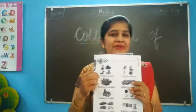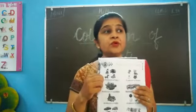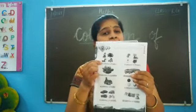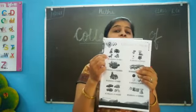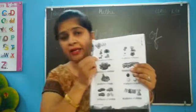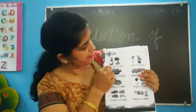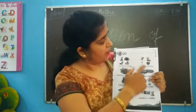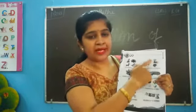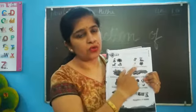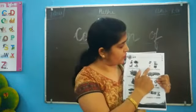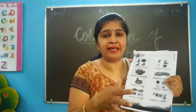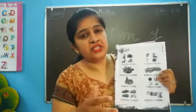Collection of toys. Aap ki khub saari khilone hai — unka jo collection hoa, unka jo group hoa, that is called collection of toys. Now, collection of flowers. Khub saari flowers ho gai — rose ho gaya, marigold ho gaya, sunflower ho gaya. Un sab flowers ko apan ikhata karlenge, toh usse kya boney ki — collection of flowers.